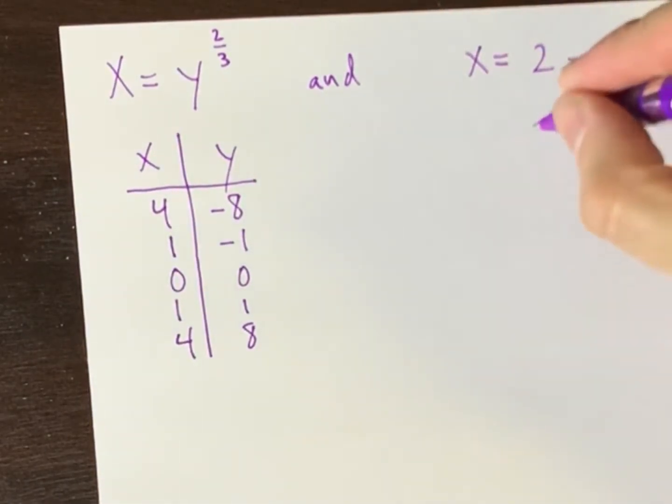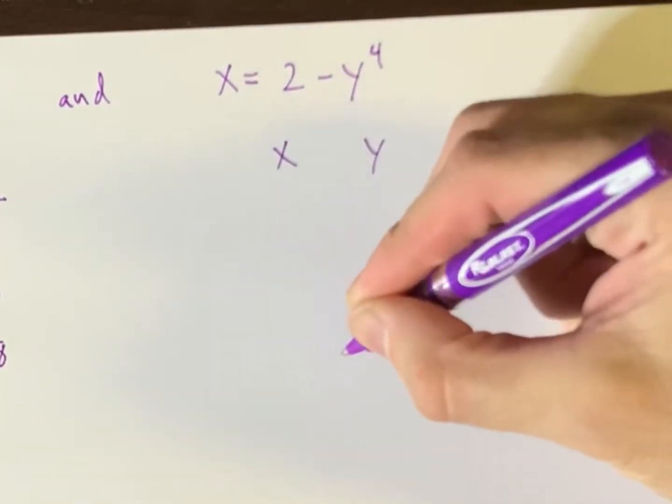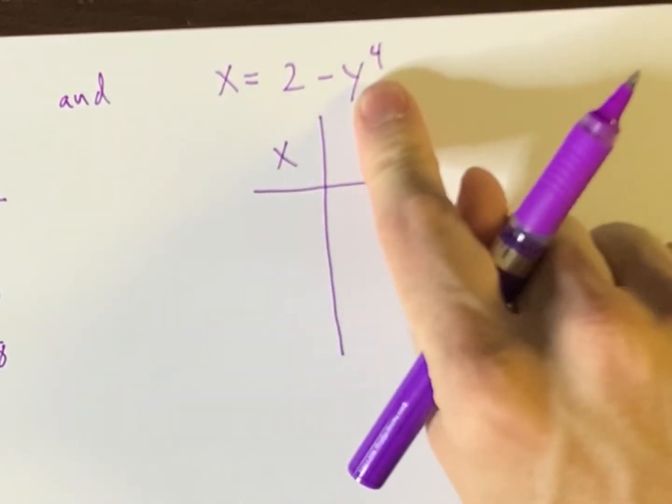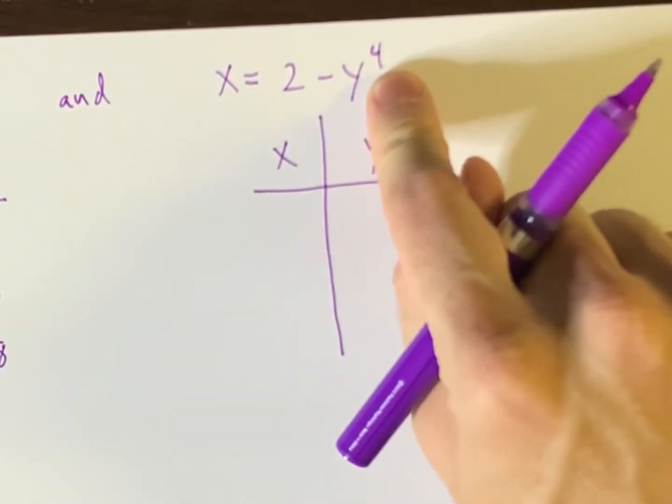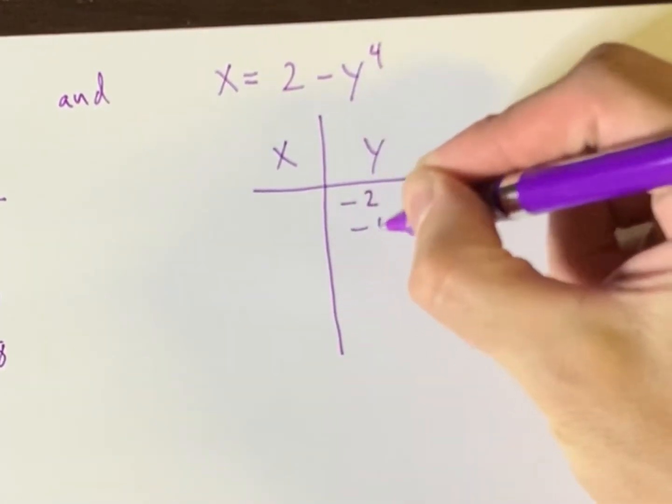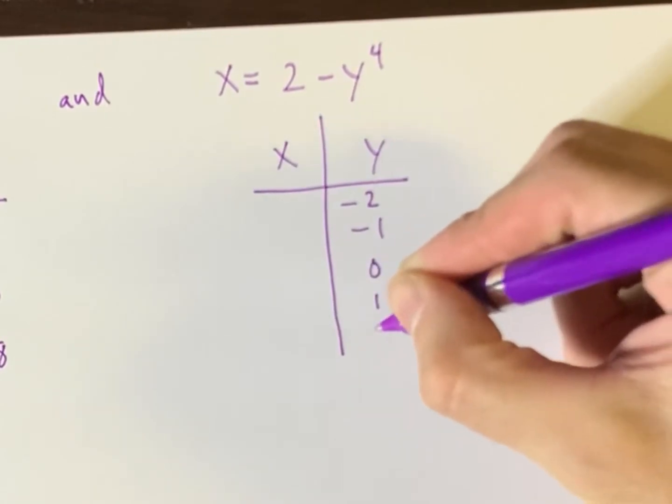And similarly for this one here, I would follow a similar approach. I would pick numbers for y that I'd raise to the power of four. So try to keep them small, because otherwise it would blow up rather quickly. Maybe like negative two, negative one, zero, one, and two.